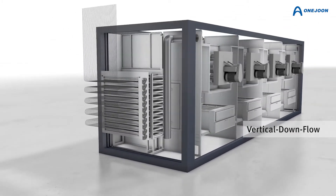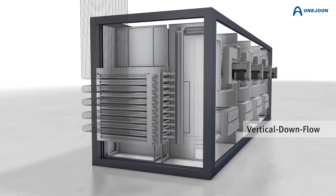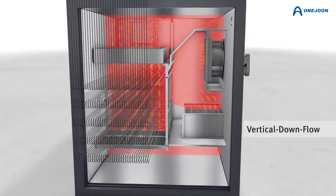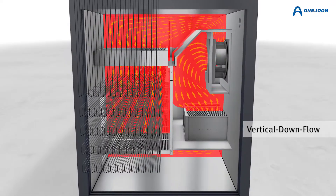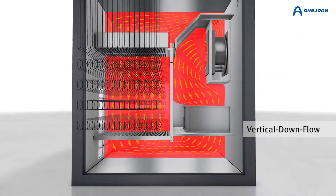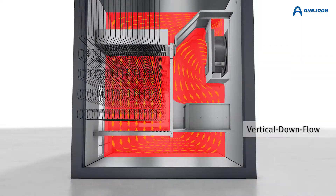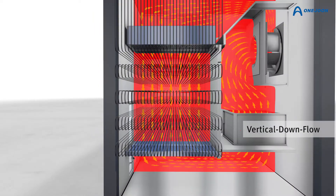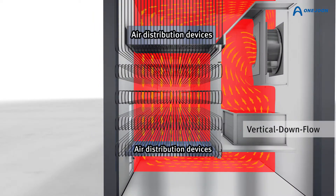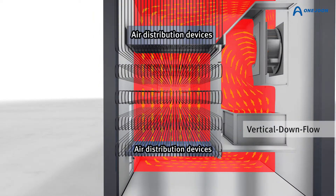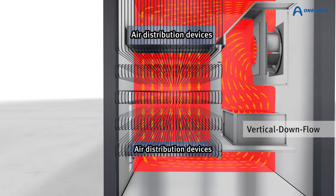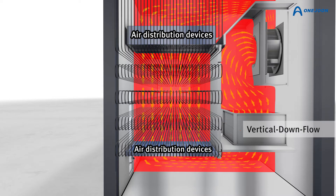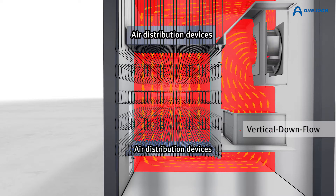Continuously welded seams within the process chamber and smoothly finished surfaces result in a maintenance-free interior and prevent process gases from escaping from the oven. The optimized design of the modular air distribution devices guarantees best-in-class airflow and temperature uniformity over the entire process chamber.